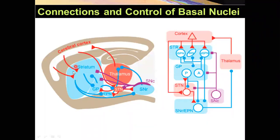There are well-developed connections between cerebral cortex and striatum, between striatum and globus pallidus, substantia nigra pars reticulata, between globus pallidus and thalamus, and globus pallidus and the subthalamic nucleus. We're going to talk about all of these connections and how they work to activate or deactivate the cerebral cortex.